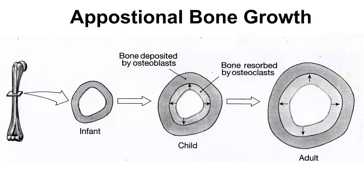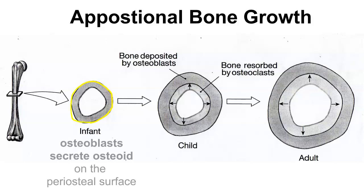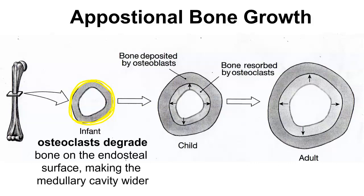Appositional bone growth is the way that bones get thicker. When a bone grows thicker, it has to also hollow out the medullary cavity so that it doesn't become too heavy. The way that works is osteoblasts on the periosteal surface will start to lay down new osteoid — new bone — and so sensibly, this is the way the bone will grow thicker. But at the same time, osteoclasts on the endosteal surface will start to degrade bone, giving a wider medullary cavity.